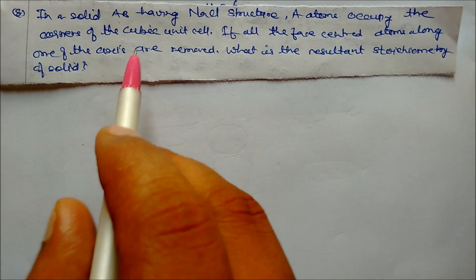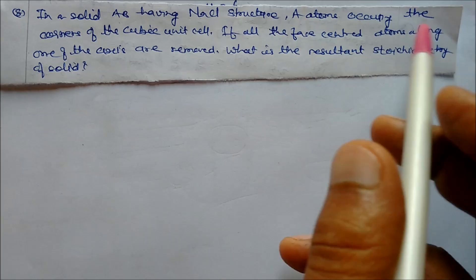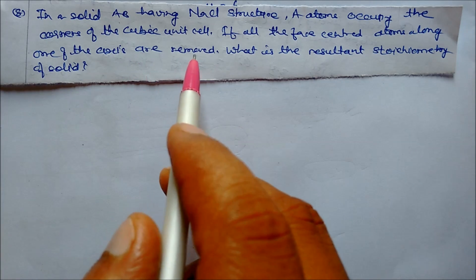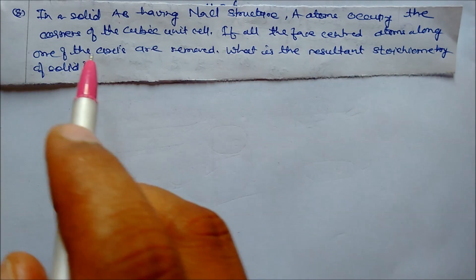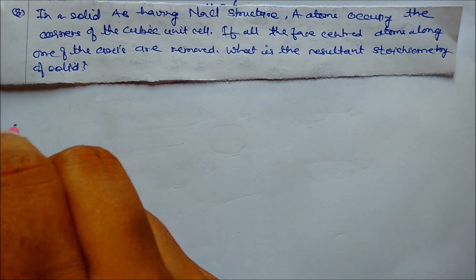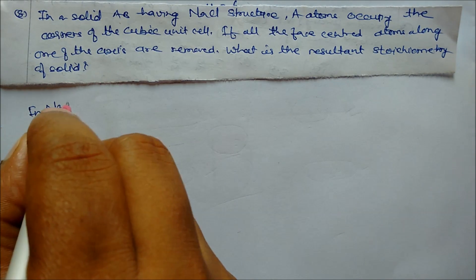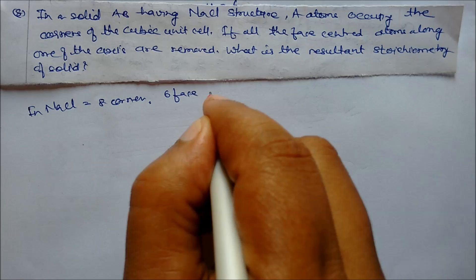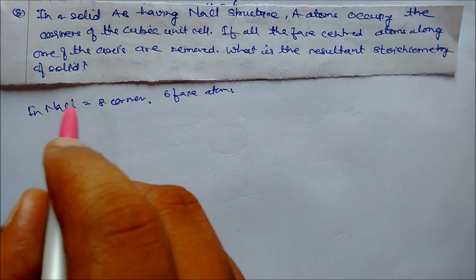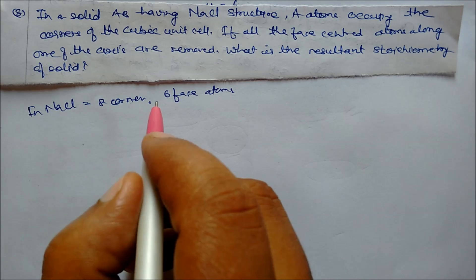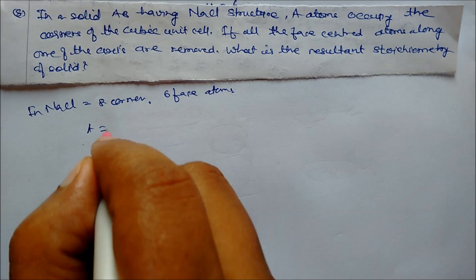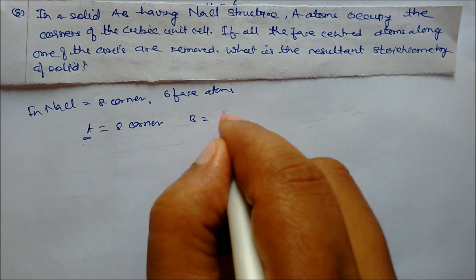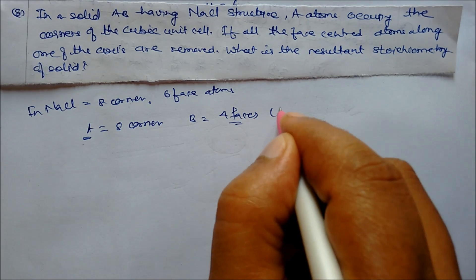Next problem: In a solid AB having NaCl structure, A atoms occupy the corners of the cubic unit cell. If all the face-center atoms along one of the axes are removed, what is the resulting stoichiometry? In NaCl there are 8 corners and 6 face atoms. Removing face atoms along one axis removes 2 face atoms, leaving 4 faces.